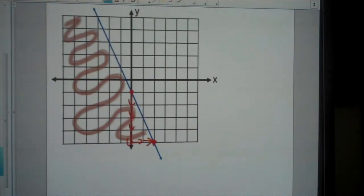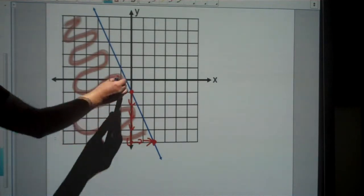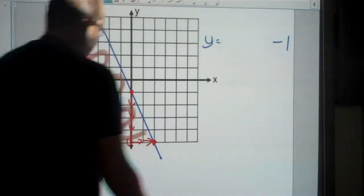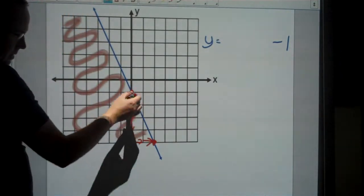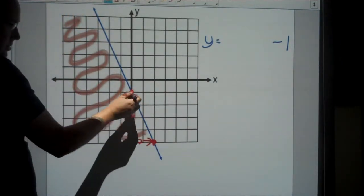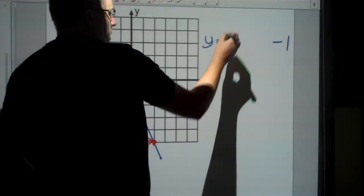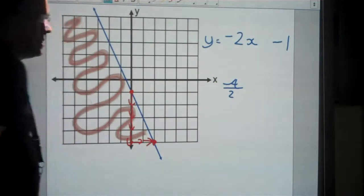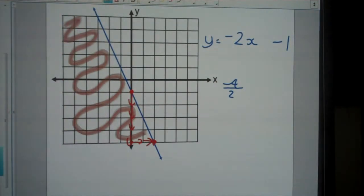For the third example, we already have part of the answer here. I can see it goes through negative 1, so minus 1. From the picture, it goes down 4 across 2, or down 2 across 1. Either way, negative 4 over 2 is negative 2. So y equals negative 2x minus 1.